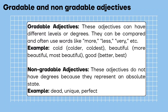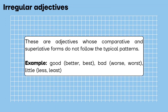Non-gradable adjectives: these adjectives do not have degrees because they represent an absolute state. Example: dead, unique, perfect. Irregular adjectives: these are adjectives whose comparative and superlative forms do not follow the typical patterns. Example: good, better, best; bad, worse, worst; little, less, least.